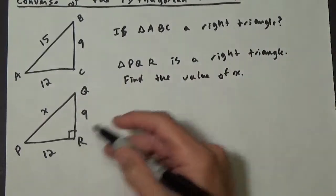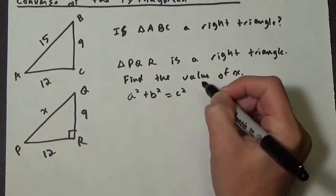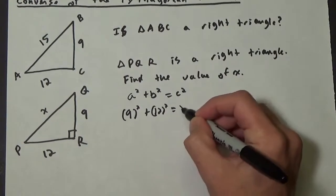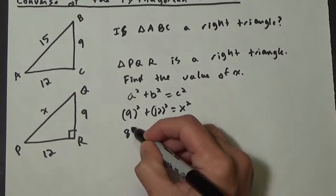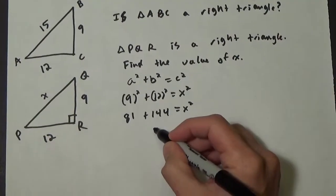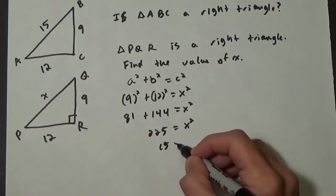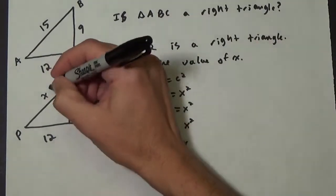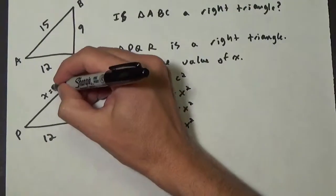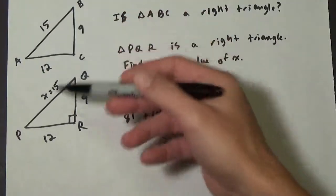Because we know triangle PQR is a right triangle, we can use the Pythagorean Theorem: a squared plus b squared equals c squared. So we have 9 squared plus 12 squared equals x squared, which is 81 plus 144 equals x squared. That gives us 225 equals x squared, so x equals 15.